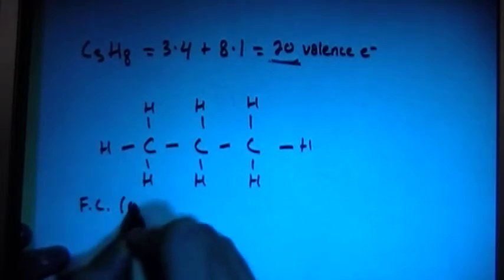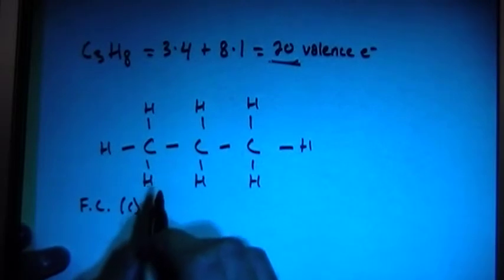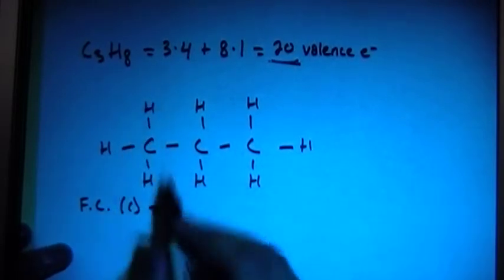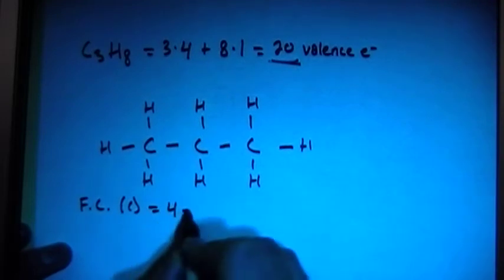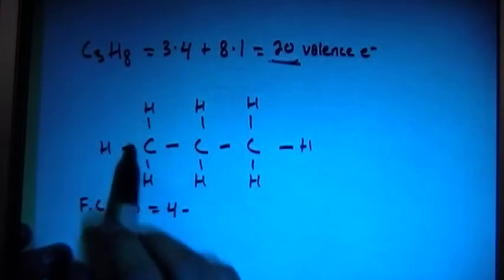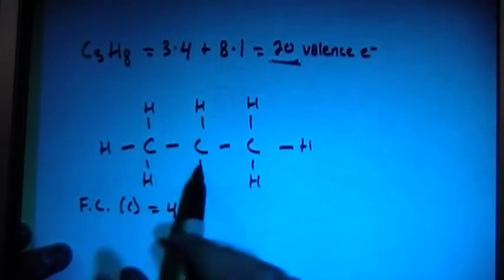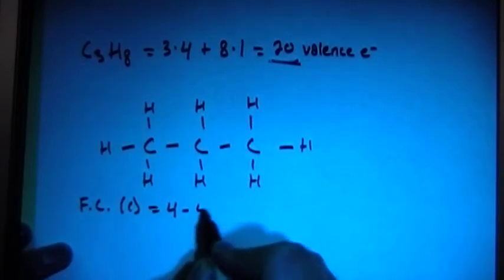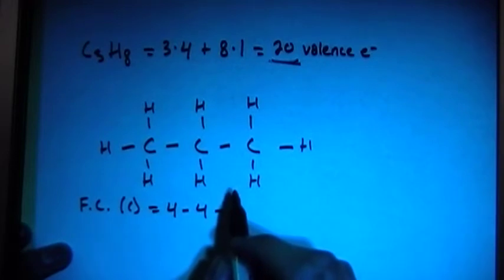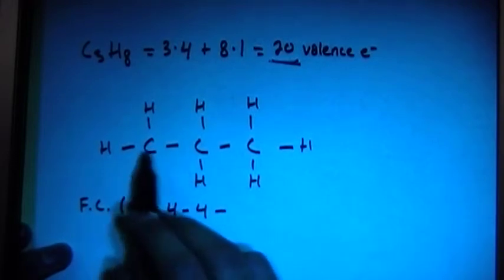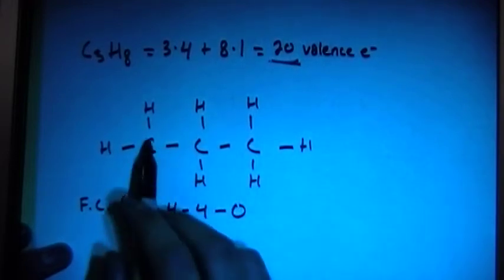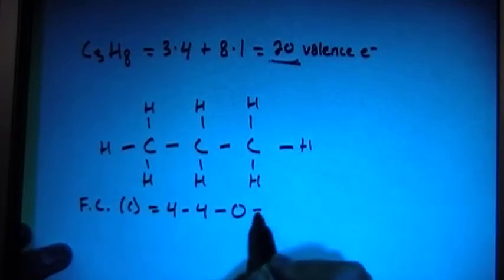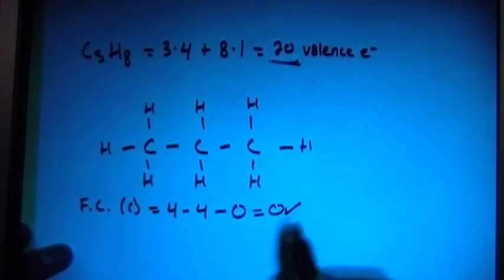So the formal charges on carbon, and remember, formal charges is the number of valence brought in, which is 4 for each carbon, minus the number of bonds, 1, 2, 3, 4 on this one, 1, 2, 3, 4 on this one, and 1, 2, 3, 4 on this one. So each of them have 4 bonds, minus the number of non-bonding electrons on the carbon, which is 0, because there's only bonds, no lone electrons. So it's going to give us a formal charge of 0, which is what we're looking for.